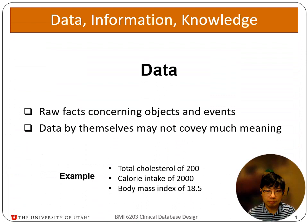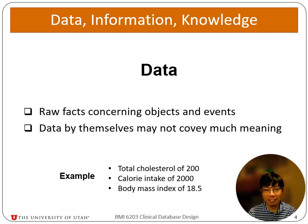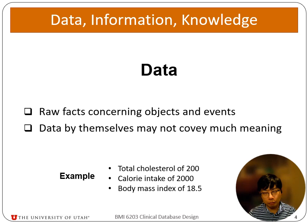So what is data? We did not cover the definition of data so far, surprisingly. But the definition of data is that it is a raw fact concerning an object and event. Good examples of data are: total cholesterol of 200, calorie intake of 2000, body mass index of 18.5. Data by themselves may not convey much meaning — they just tell us raw facts about objects and events.